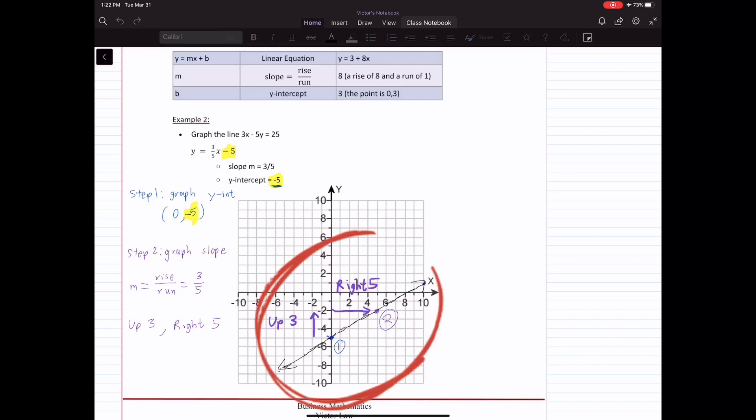Y originally is negative 5. With negative 5, you move up by 3, that will give you negative 2. And that is your next coordinate. Your next coordinate is 5 comma negative 2.